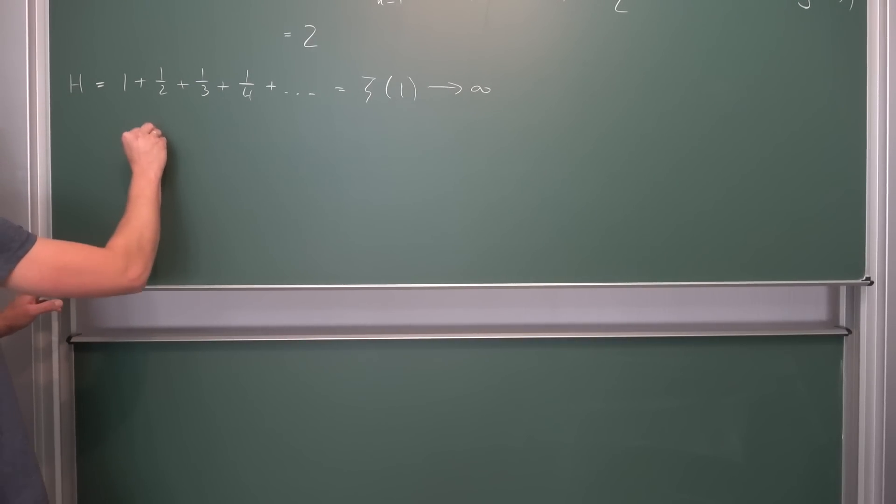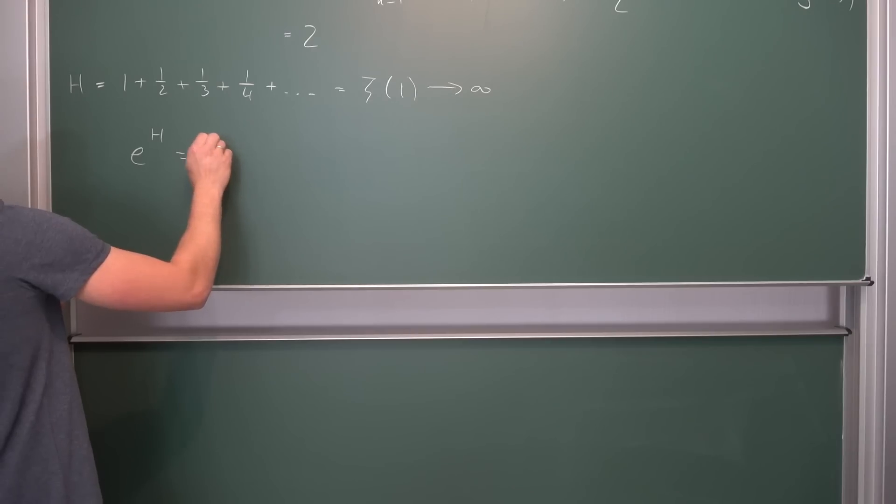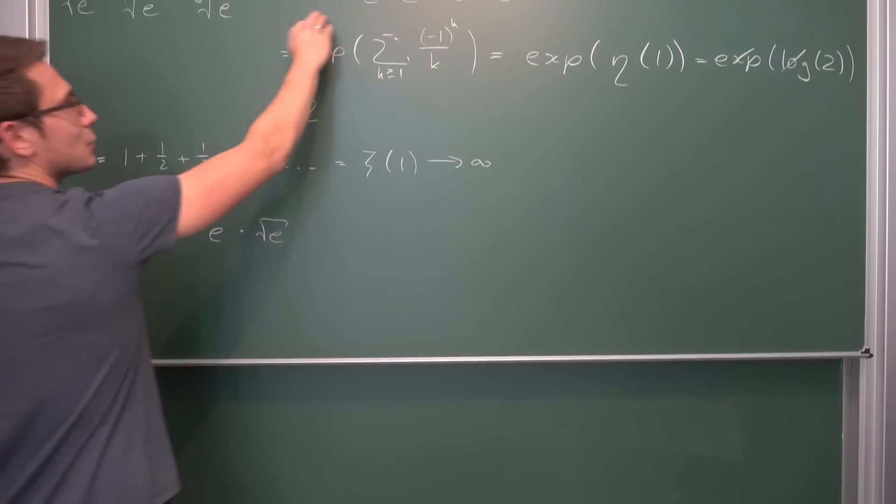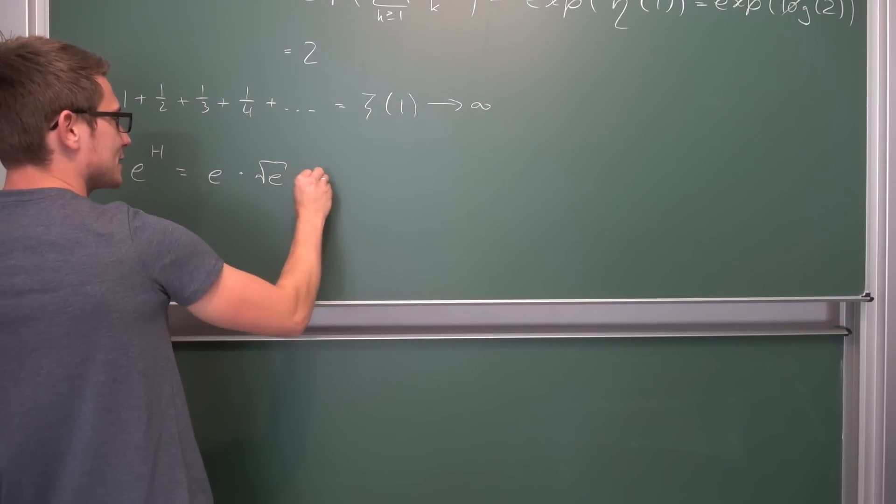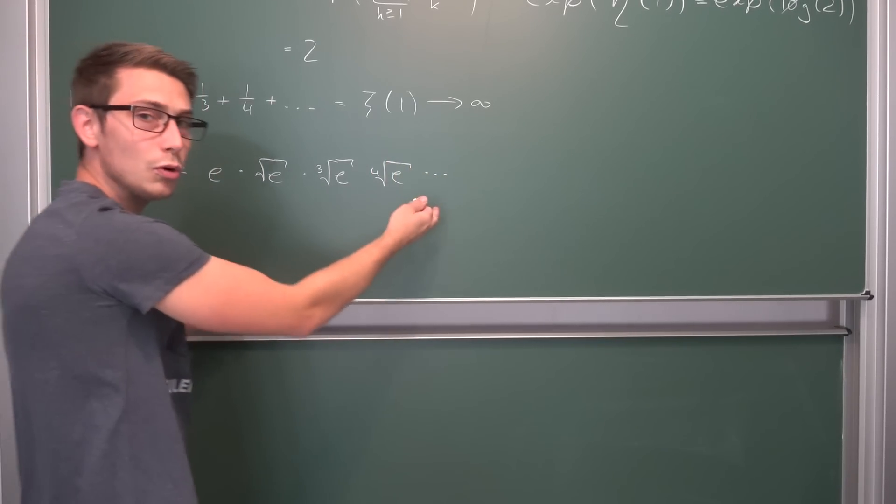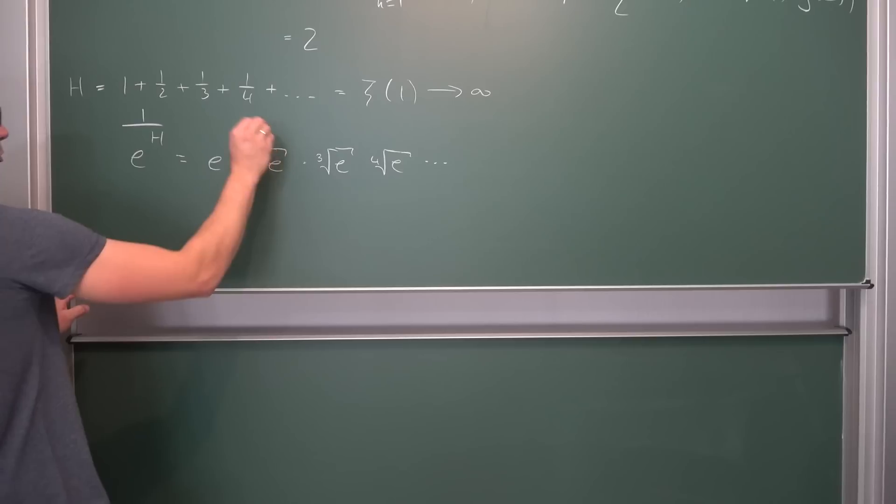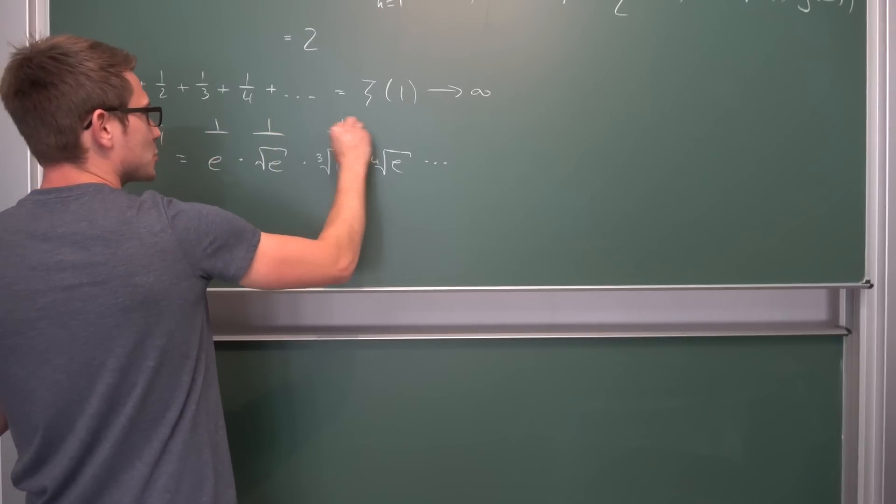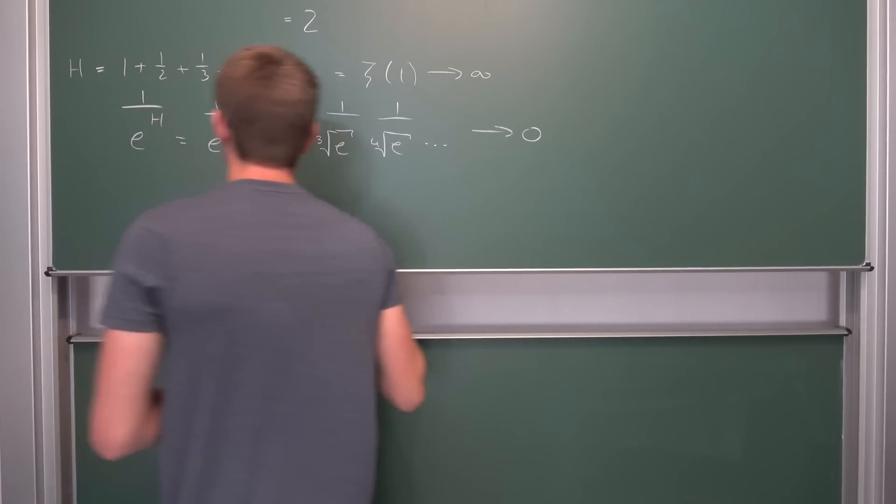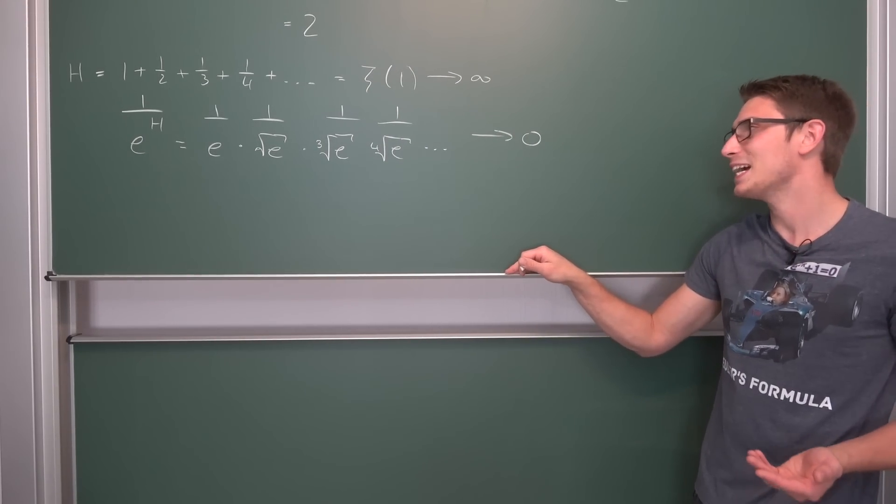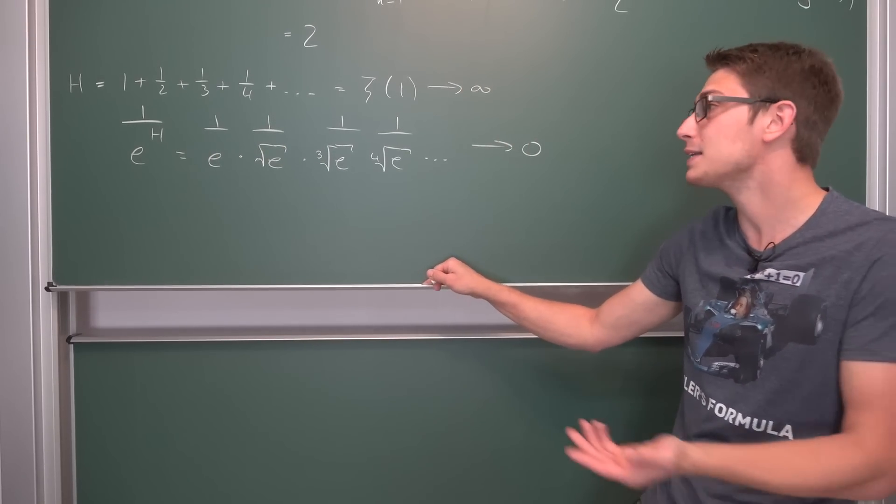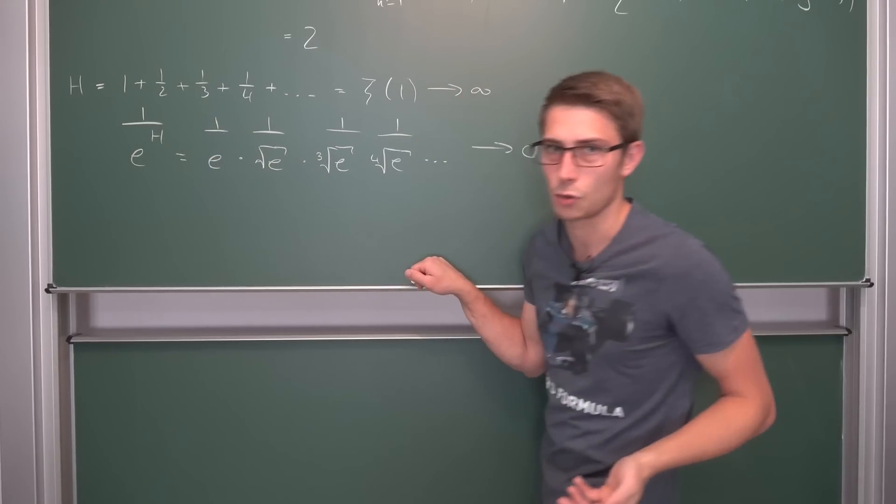This is basically zeta of one and this thing goes to infinity. So this is bad. If we have e to the infinity, if we plug this up in the argument, we have something that doesn't converge. But can we make it converge to something? Obviously, if we have one over e to the harmonic series, then this thing is going to go to zero, one over infinity. It's going to go to zero even though it's a very slow process. In terms of speed of convergence or divergence, this thing diverges extremely slowly.